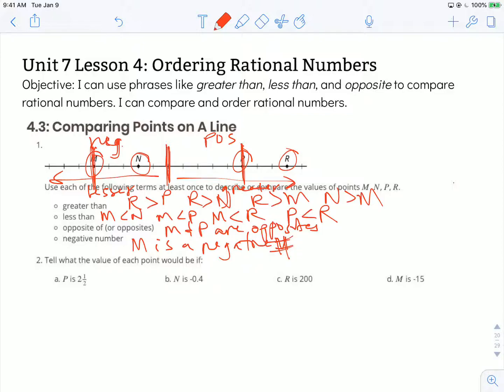Number two. Tell what the value of each point would be if P is two and a half. So if P right here was two and a half, let me erase some of this so it's easier to see. If P is equal to two and a half, I want to know what are my tick marks marking. So I have one, two, three, four, five tick marks before I get to P. So five equal groups and two and a half. Each of these tick marks must be one half.